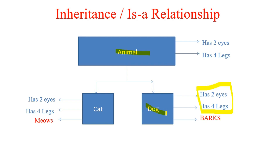Reusability means making code reusable because a property is already present in the parent class. The 'extends' keyword is a keyword which indicates that a class is derived from an existing class.